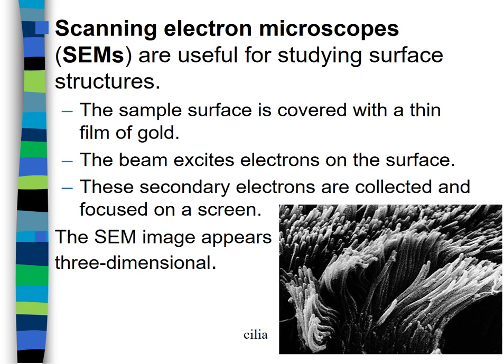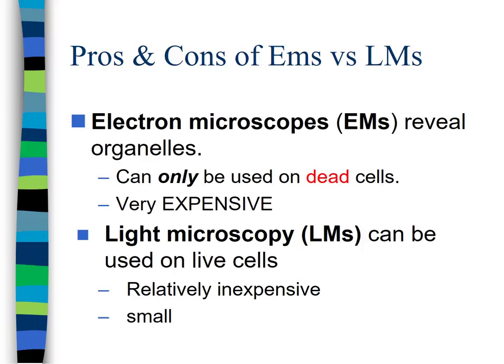The drawback of both electron microscope types is that you must kill the organism — they can only be used on dead cells. Electron microscopes are also large and very expensive — hundreds of thousands of dollars. Light microscopy, on the other hand, can be used on living cells so we can watch living processes occur, and microscopes are relatively inexpensive, from a couple hundred to several thousand dollars.